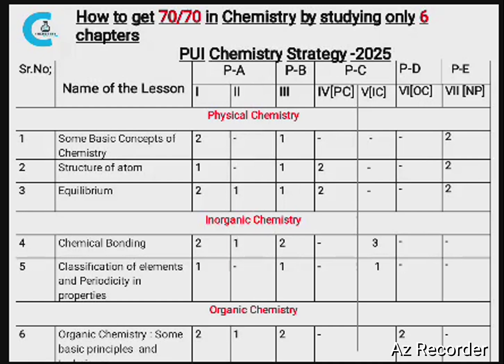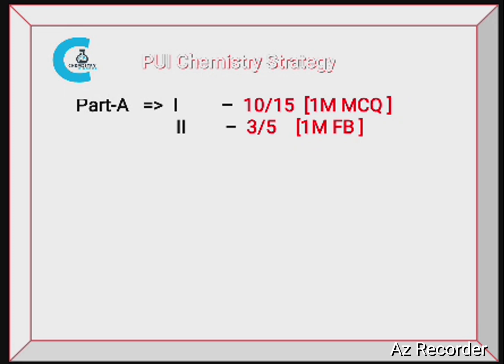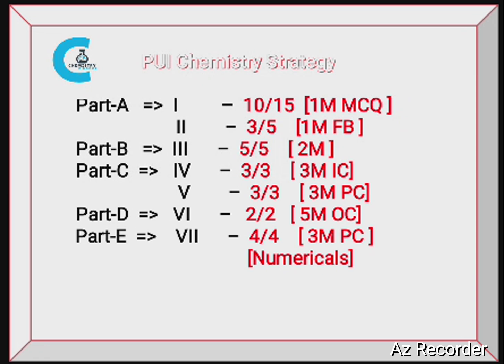By studying only these 6 chapters, will you get 70 out of 70? Yes, you can. Here is how: 15 MCQs — you get 10 from these chapters. Fill in the blanks — 5 total, you get 3, and the remaining 2 can be identified easily. 2-mark questions — all 5 are covered. 3-mark physical chemistry — all 3 covered. 3-mark inorganic chemistry — all 3 covered. Organic chemistry 5-mark — both 2 questions covered. Numerical problems — all 4 questions answered. So you can get 70 out of 70 by studying just these 6 chapters.